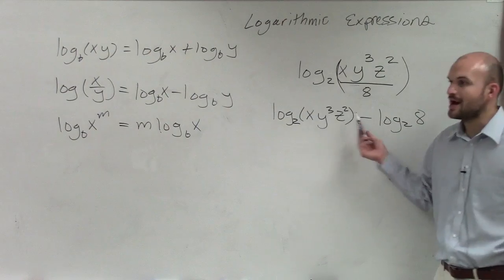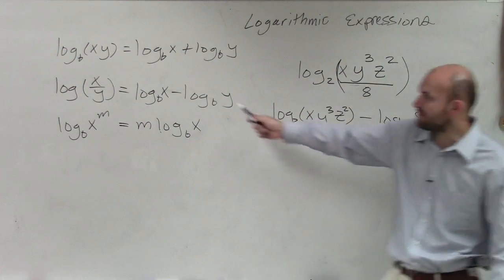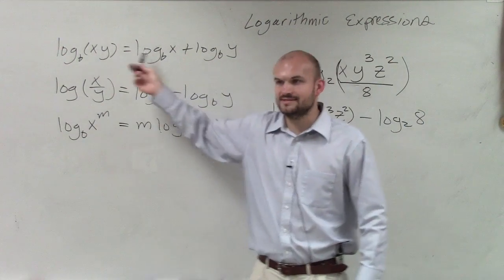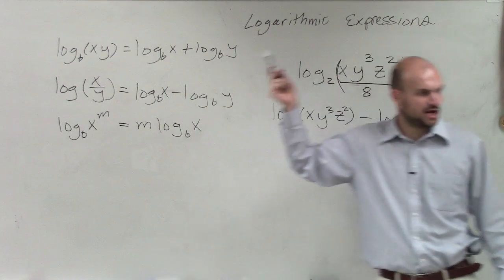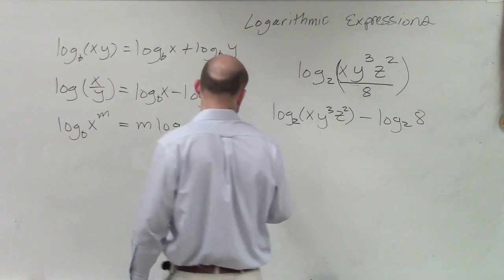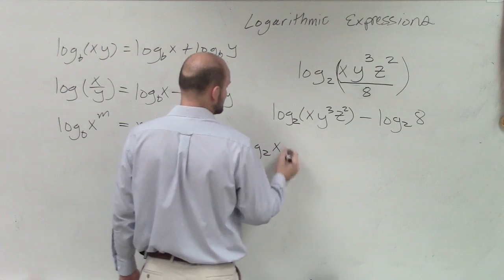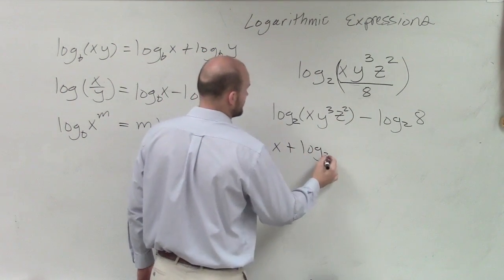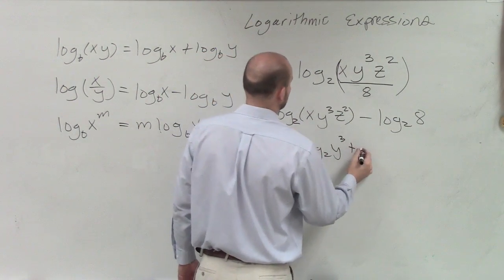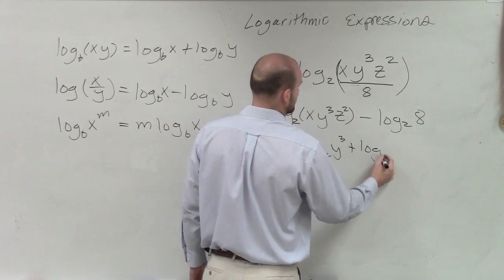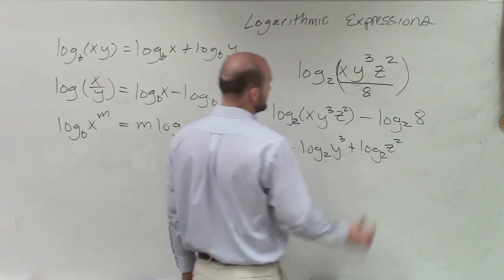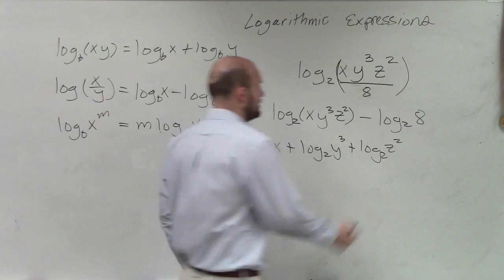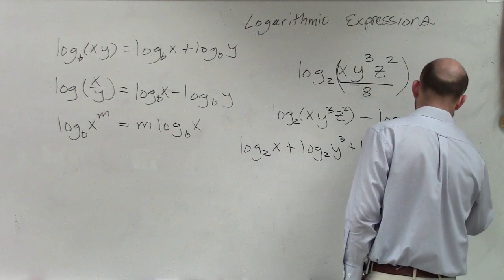Now we have the product of three logarithms. So what do we do when we have a product? You just separate them with their own additional logarithm and add. So therefore, this is log base 2 of x plus log base 2 of y cubed plus log base 2 of z squared minus log base 2 of 8.